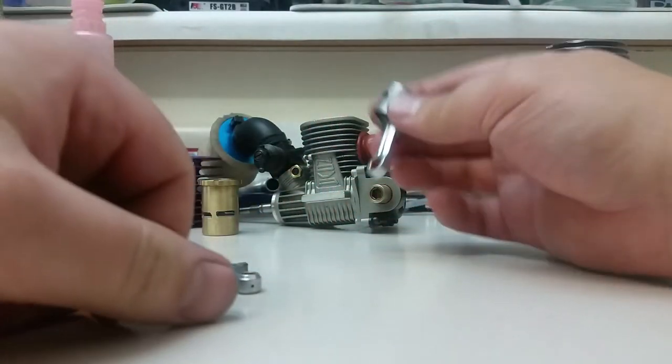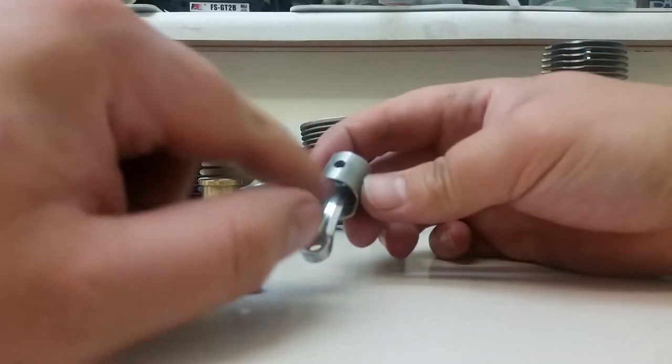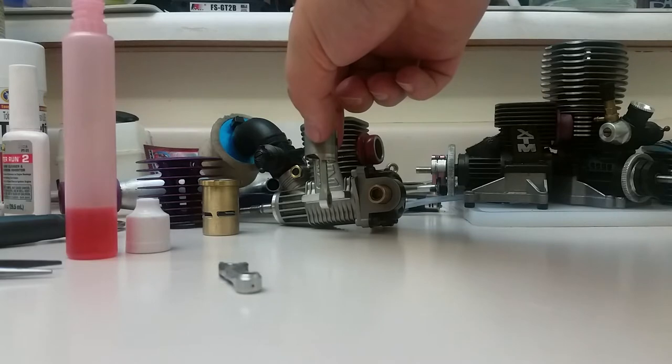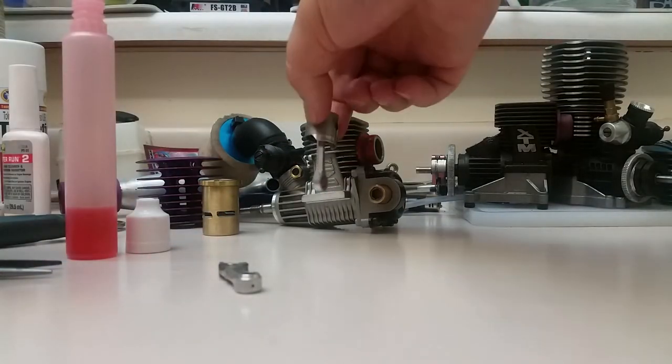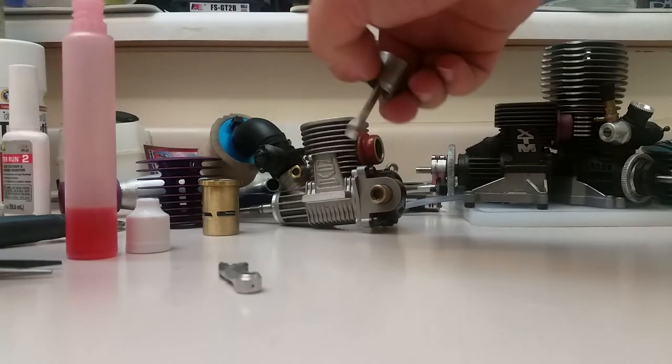Now what we do is put our piston back in the motor with the cutaway side facing in like that, so the long side is always facing towards the exhaust so it doesn't hit. Some engines are different, so keep that in mind. Take pictures when you have things apart.